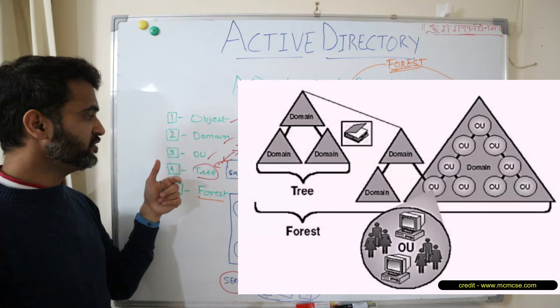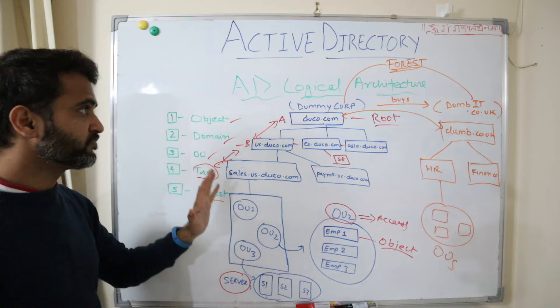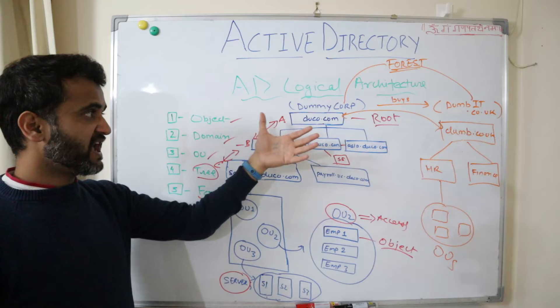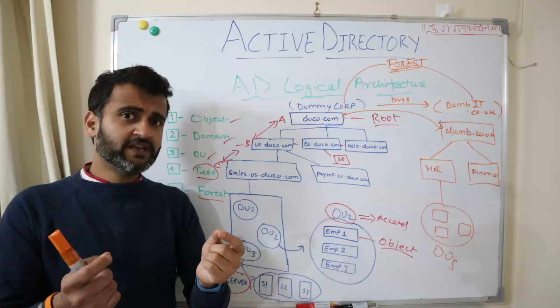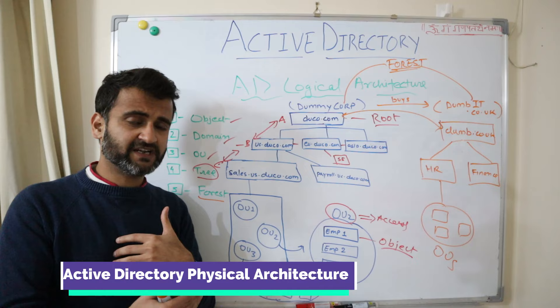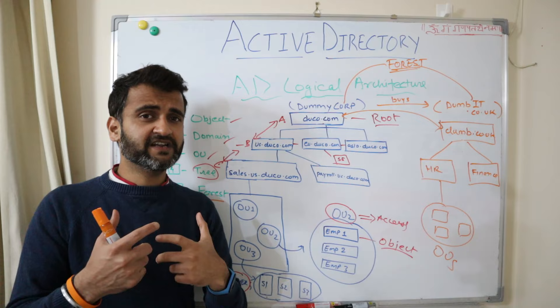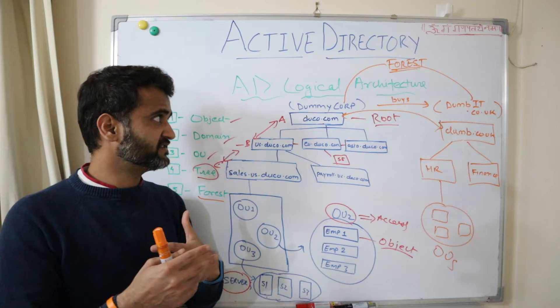Those are the five components: Object, Domain, Organization Unit, Tree, and Forest. This is how we define our whole logical architecture. Everything in Active Directory is very closely related to a domain name server. There is another very key concept we will now understand when we go to the physical architecture of Active Directory, which is the domain controller — and how the physical architecture works and how DNS plays a role in that.